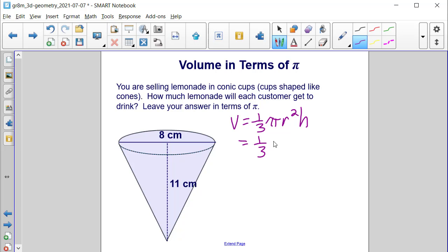So we still have the 1 third. It says leave your answer in terms of pi, so we're going to keep that symbol there. The diameter is 8 centimeters, so therefore the radius will be 4 centimeters. Let's put that in, 4 squared. And then the height is 11 centimeters.